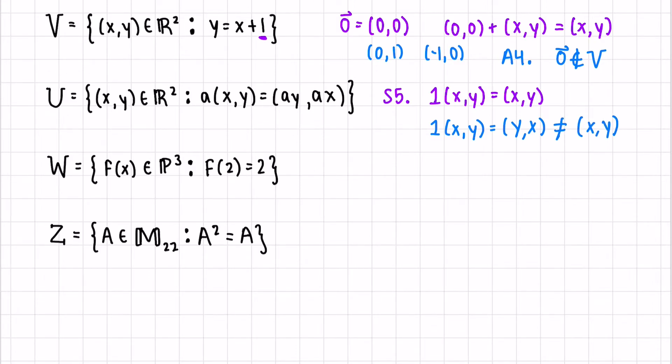Therefore, S5 fails and it is not a vector space. In this next example, we see that all the functions in P^3 have to pass through the point x is 2 and y is 2.